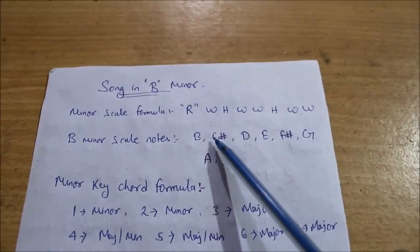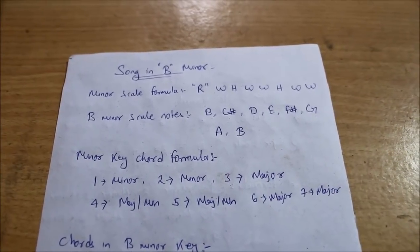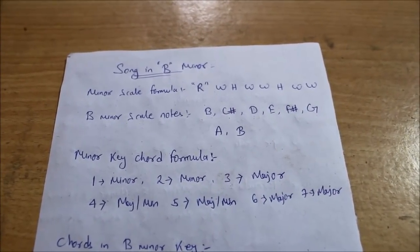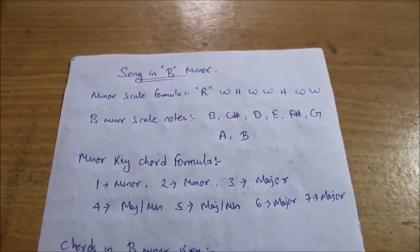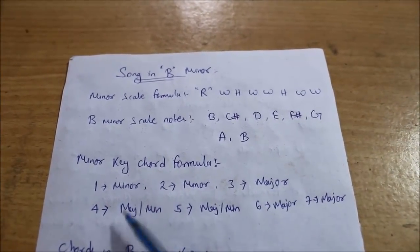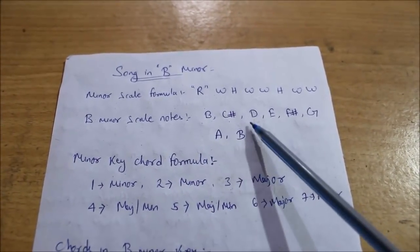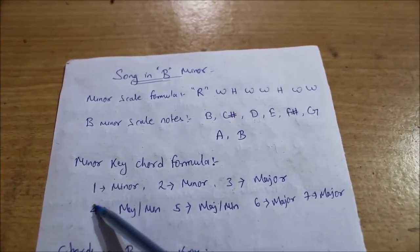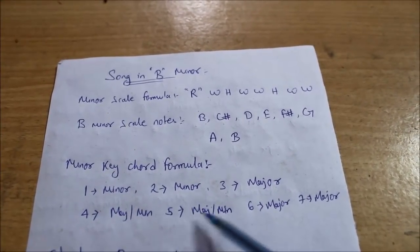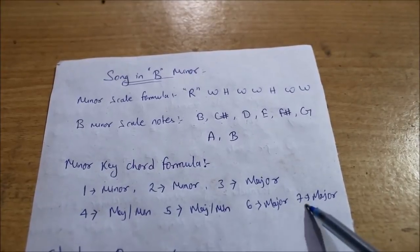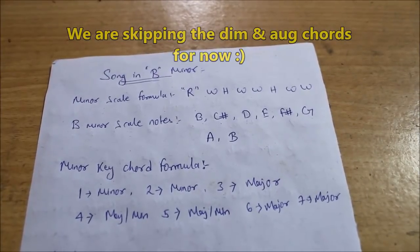What do you get in B minor? The notes are: B, C#, D, E, F#, G, A, and B. But the chord formula is very interesting because you have extra chords in minor key since minor has three types: melodic, natural, and harmonic. The formula is: first we have minor (B minor), second is minor (C# minor), third is major (D major). The fourth note becomes major or minor, which is interesting. The fifth becomes major or minor, sixth becomes major, and seventh becomes major. I'll skip diminished chords to keep it simple.